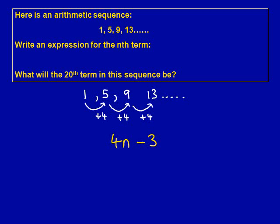We now need to see how we go from our 4n to the first term in the sequence. How do we get from 4n to 1? We take away 3. So, I have to write down minus 3. The answer is 4n minus 3.